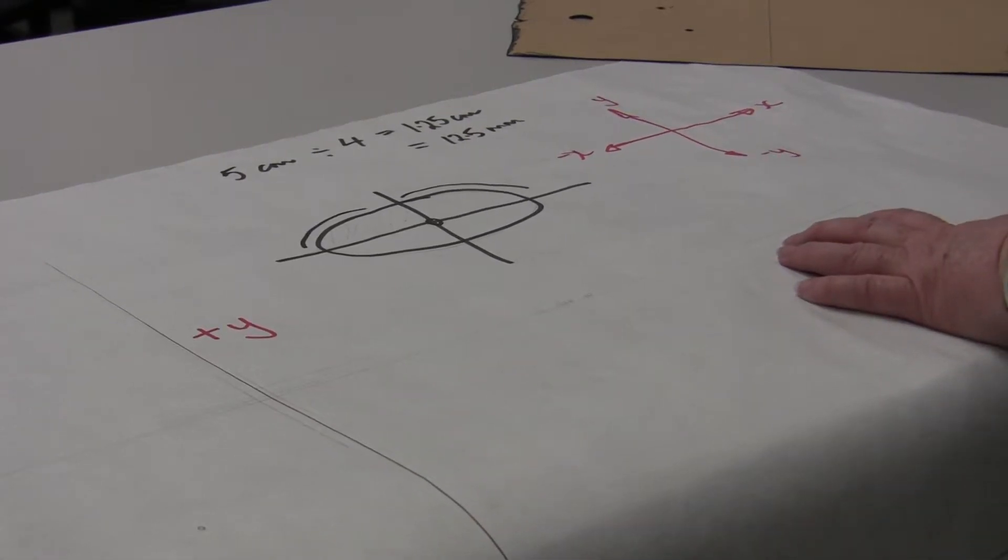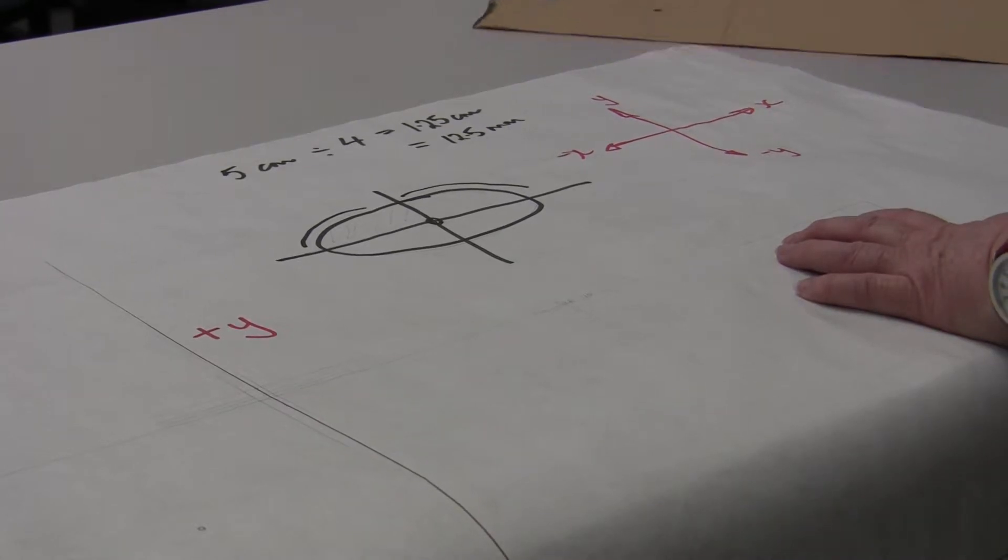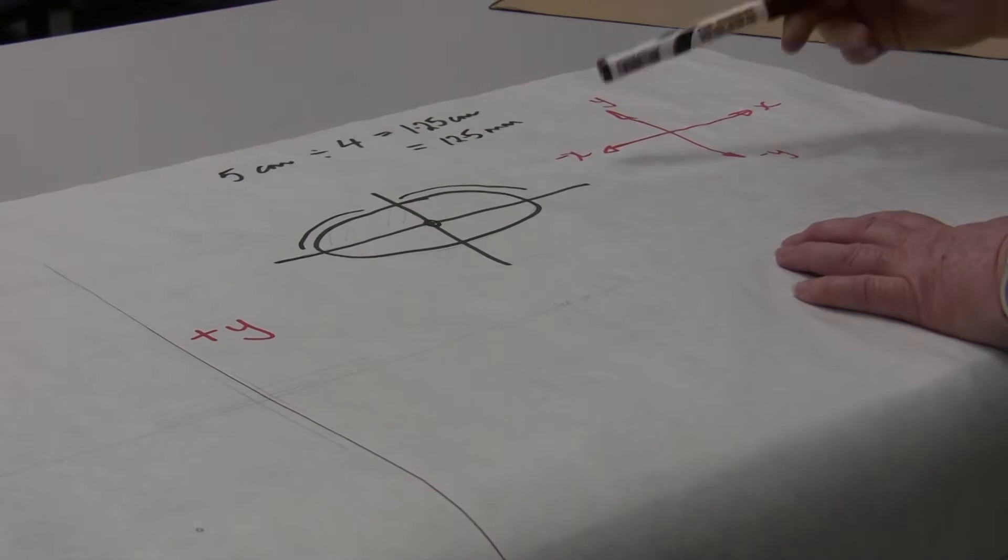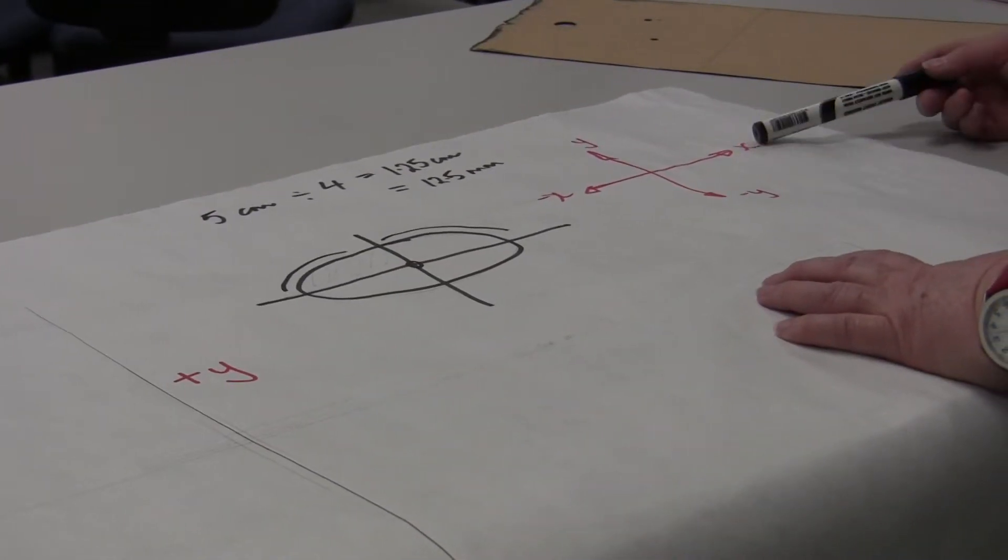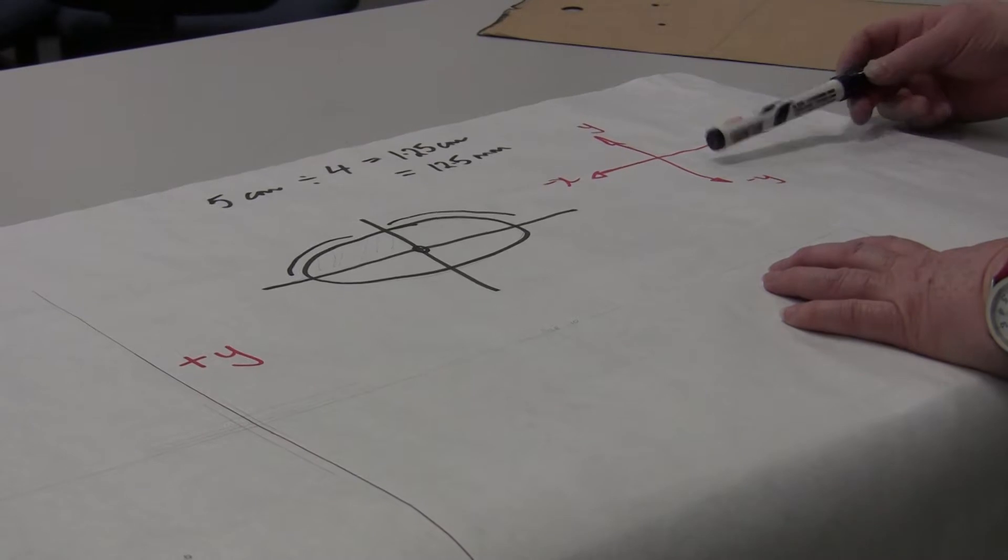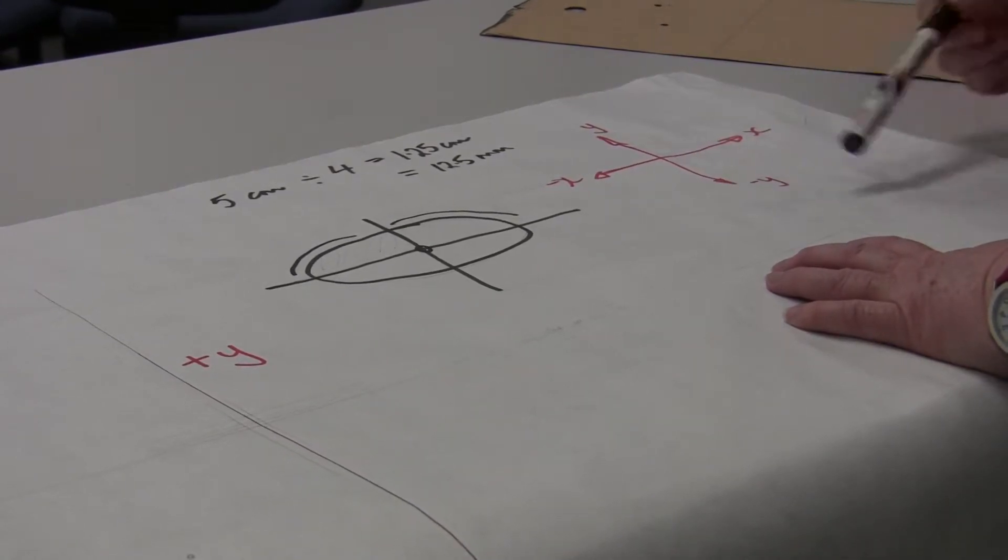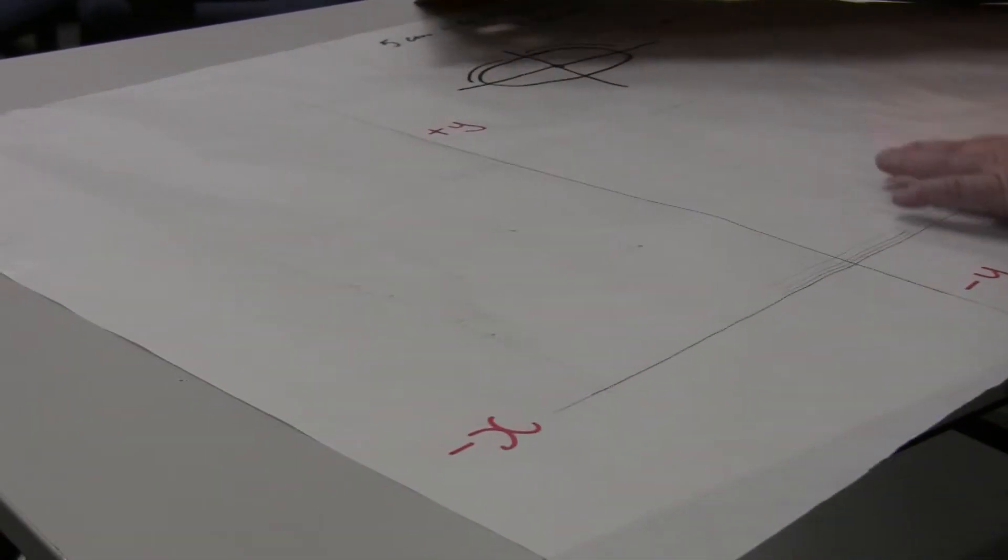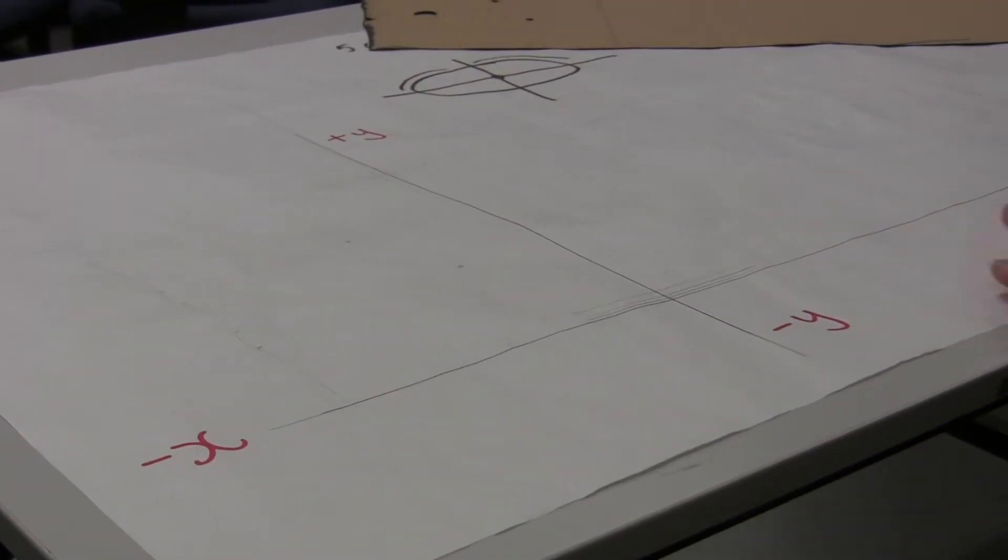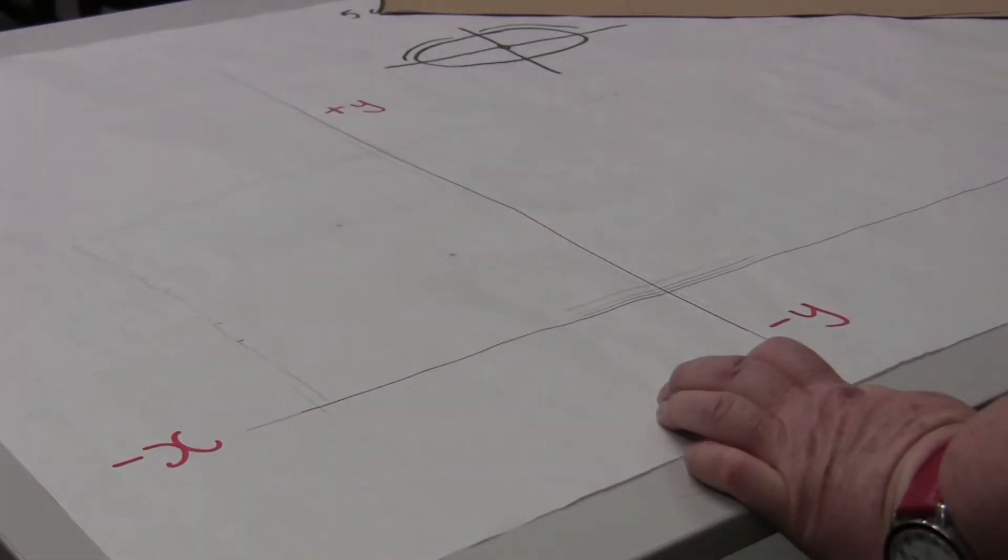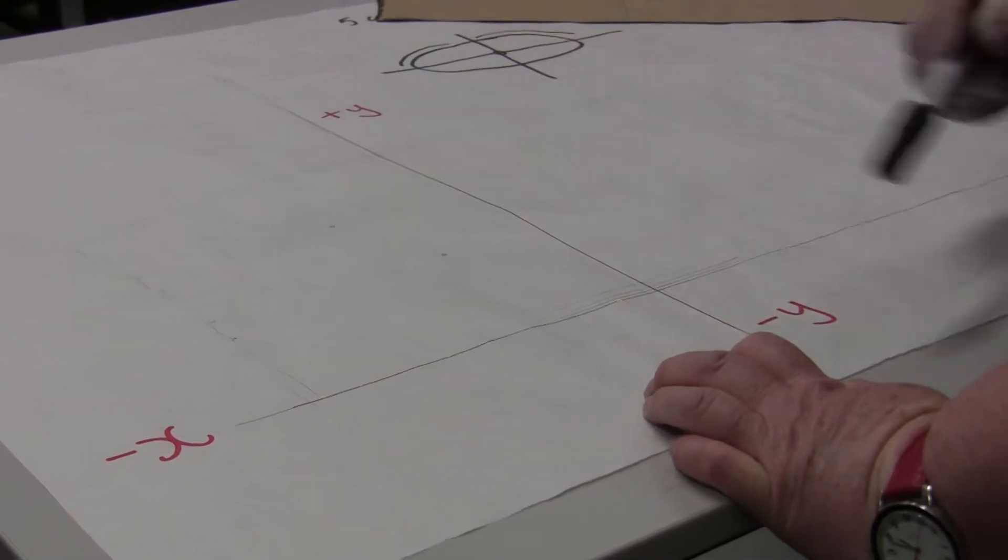To do that we're going to use the movement method, and to do the movement method we start off by putting in x and y coordinates. Negative x to the left hand side, positive x to the right, positive y to the sky, negative y down to the earth. So we've got our block set up here with the x-axis and the y-axis.